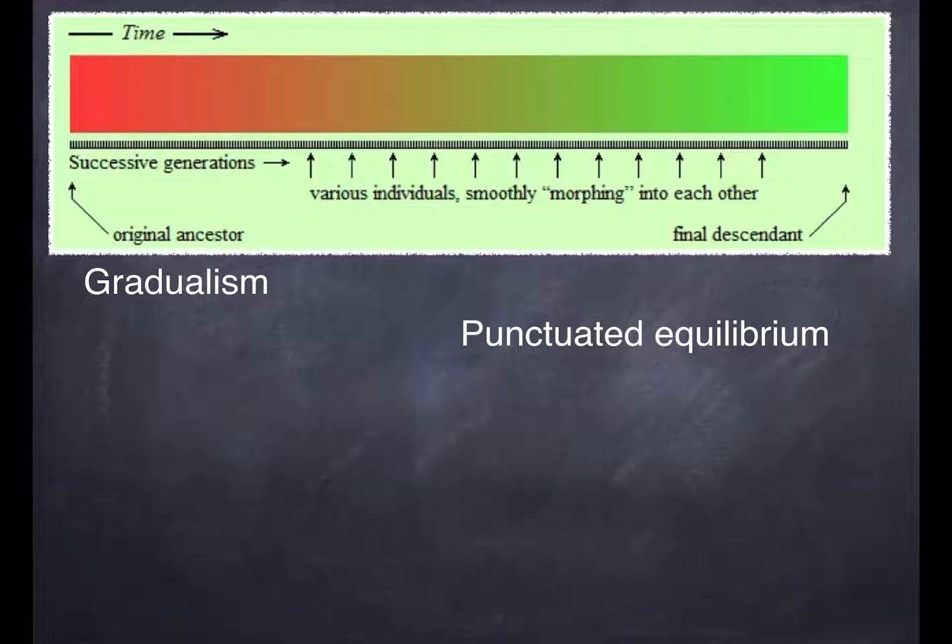Essentially, Darwin proposed that things change gradually over a long period of time, which is what this graph is trying to show you here. So we start off down this end, and as changes occur, that would be microevolution and eventually macroevolution, but these gradual changes accumulating over time until we end up with the modern example.